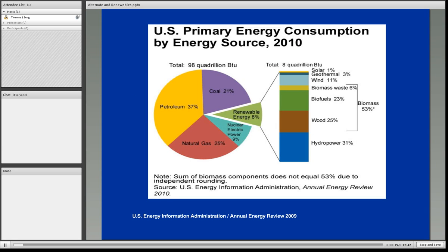This graphic shows the percentage of total energy consumption in the U.S. that renewable energy represents. As of the latest information for 2010, renewable energy only represented 8% of total U.S. energy consumption. Within that group, the breakdown is solar, geothermal, wind, biomass, and hydroelectric power.